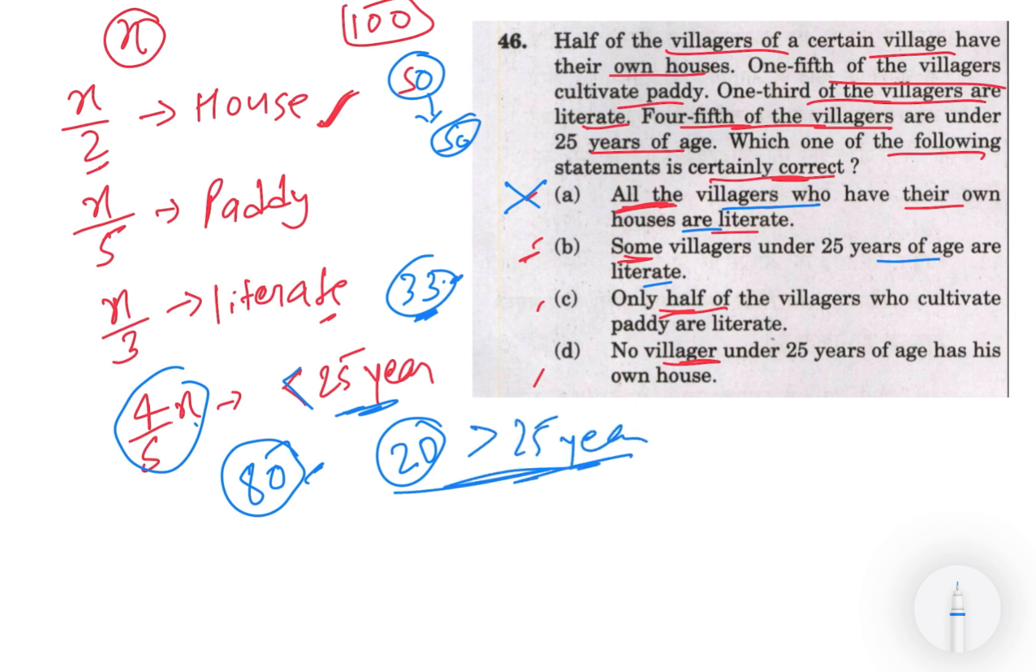Yeh sab ko hum literate maan lete hai ki yeh pure ke pure literate hai, thik hai. Toh abhi bhi hume kya pata chal raha hai ki jo 33 meh se 20 gaya, kitna bach gaya - lag bhag 13.33 agar 100 ke hesaap se chalte hai, toh itna aur literate hamare bachayenge.